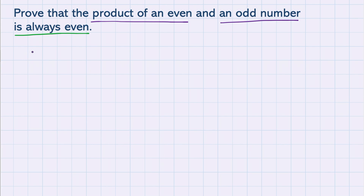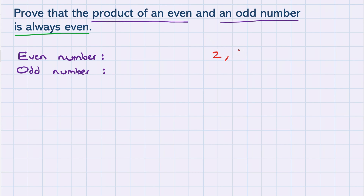To make a start on this question, we're going to need to be able to express an even and an odd number algebraically. Let's take a look at the even numbers — we all know those: 2, 4, 6, 8, 10 and so on. These are all just multiples of 2, they're just the 2 times table. So let's think about how we can write this down.